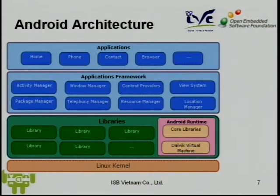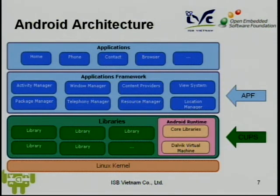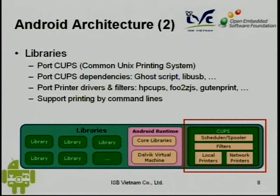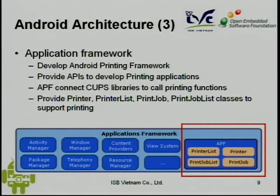In the Android architecture, Android printing will span the top three layers. CUPS will be in the library layer. Then we develop APF — the Android Printing Framework — in the application framework layer. And in the top layer we develop the printing application in the application layer. In the library layer we port CUPS and CUPS dependencies such as Wallstrip, USB library, and printer driver filters such as HP CUPS for HP printers and Gutenprint for other printers. This layer supports printing by command line for developers, not for end users. In the application framework layer, we provide APIs for developing printing applications, and this API connects with the CUPS library to invoke printing functions.